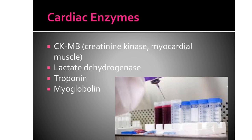Any rise in troponin can indicate myocardial cell damage. Next is myoglobin. Myoglobin is an oxygen-binding protein found in cardiac and skeletal muscles. The level rises within one hour after cell death, peaks in four to six hours, and returns to normal within 24 to 36 hours.